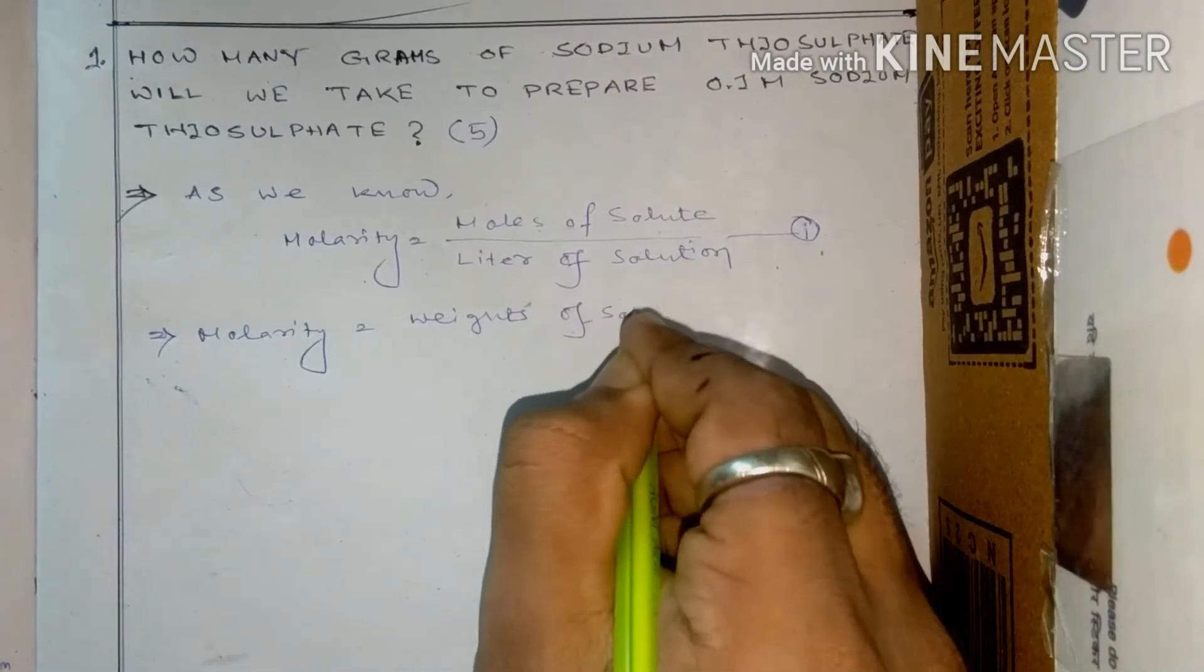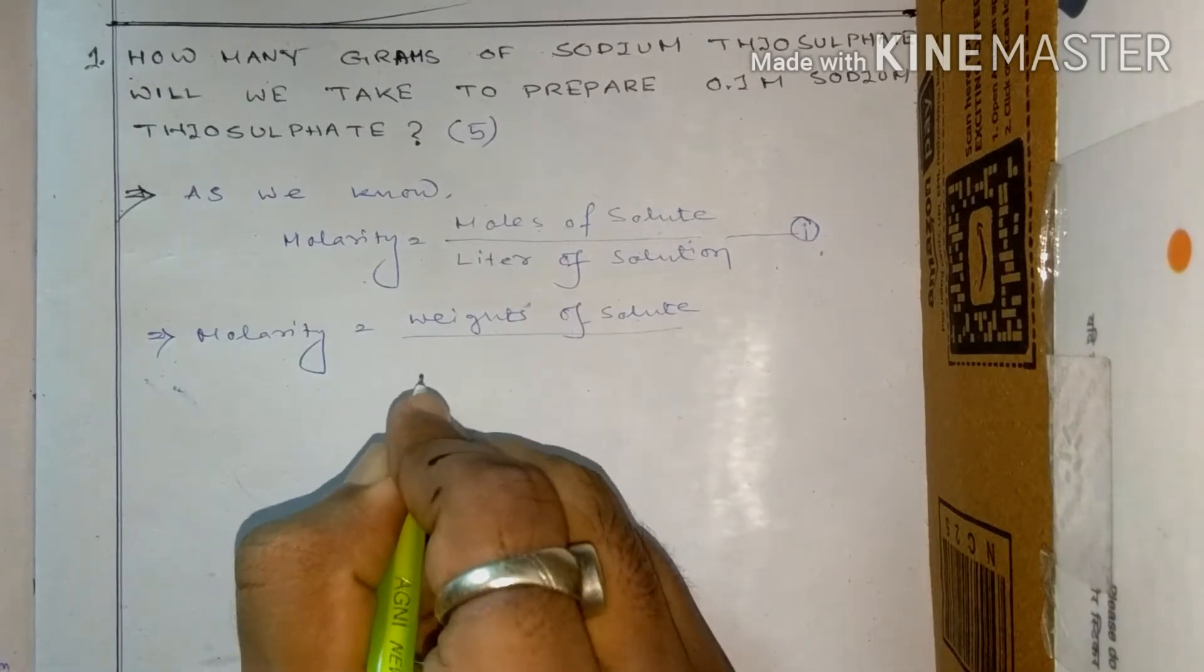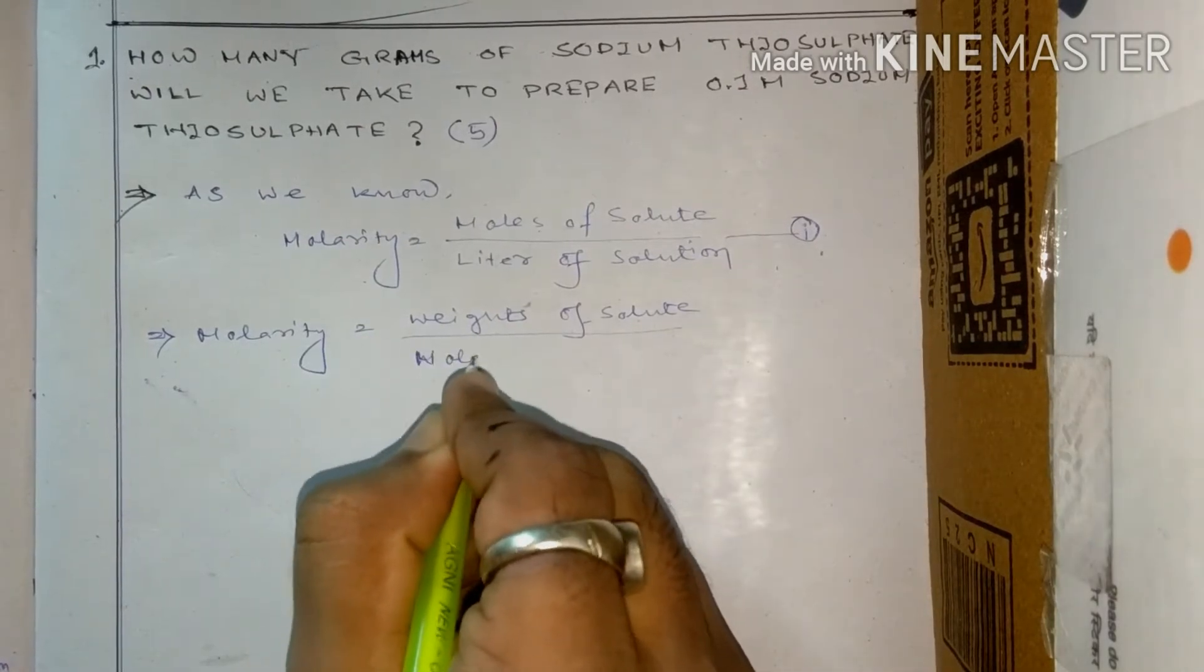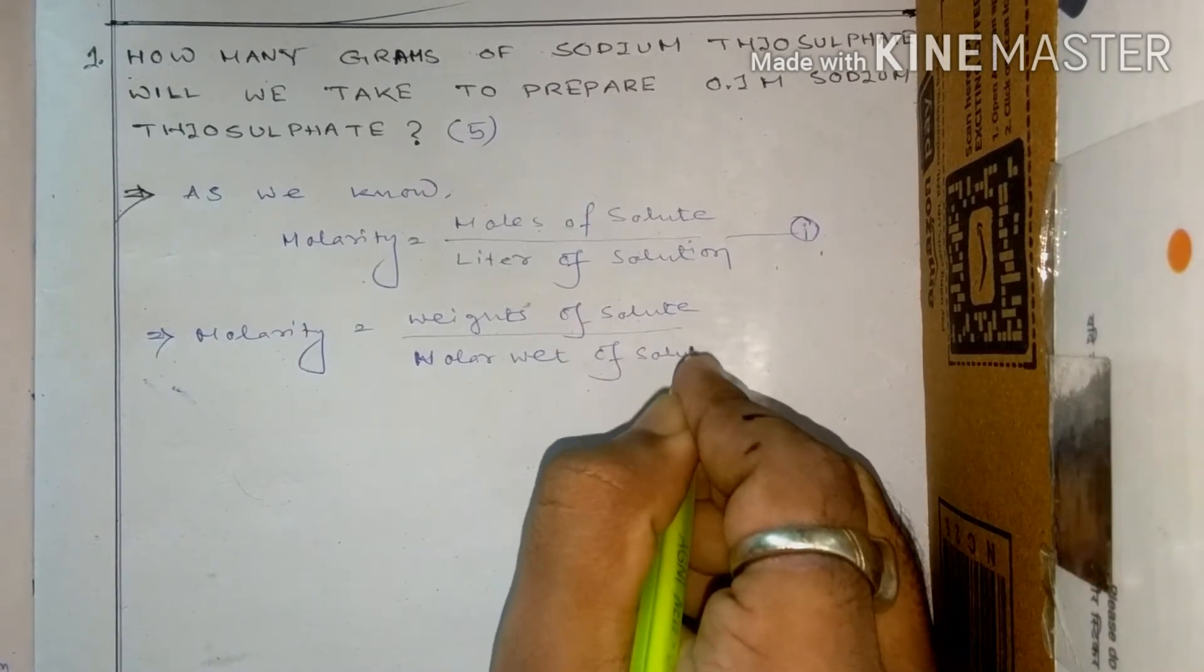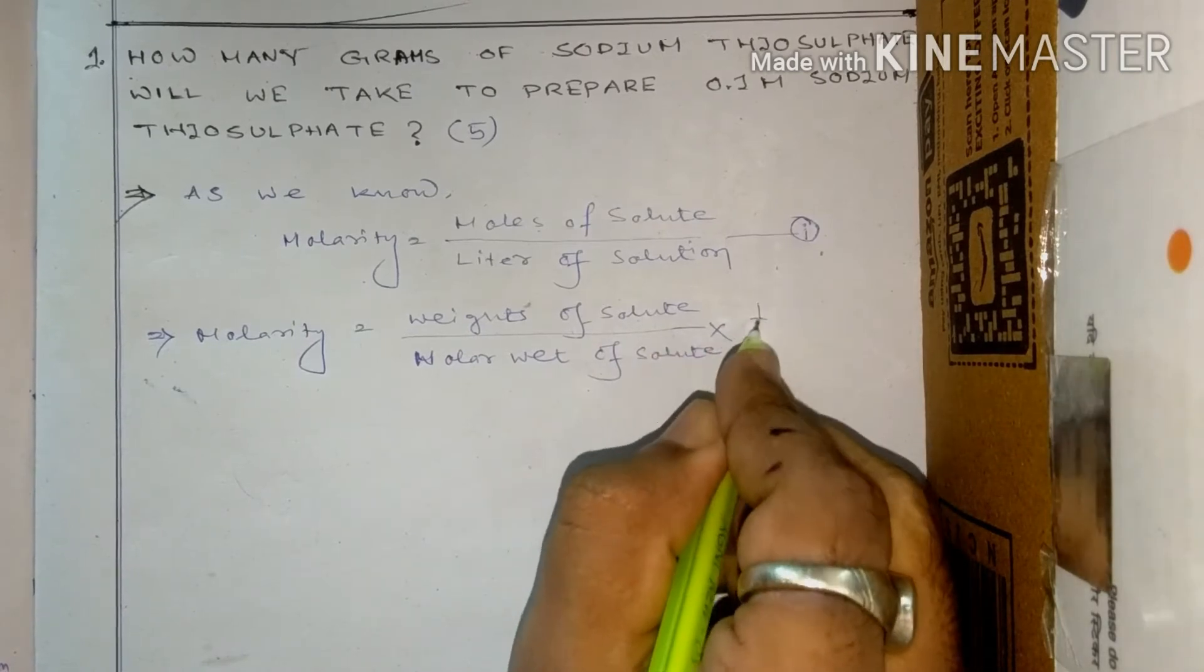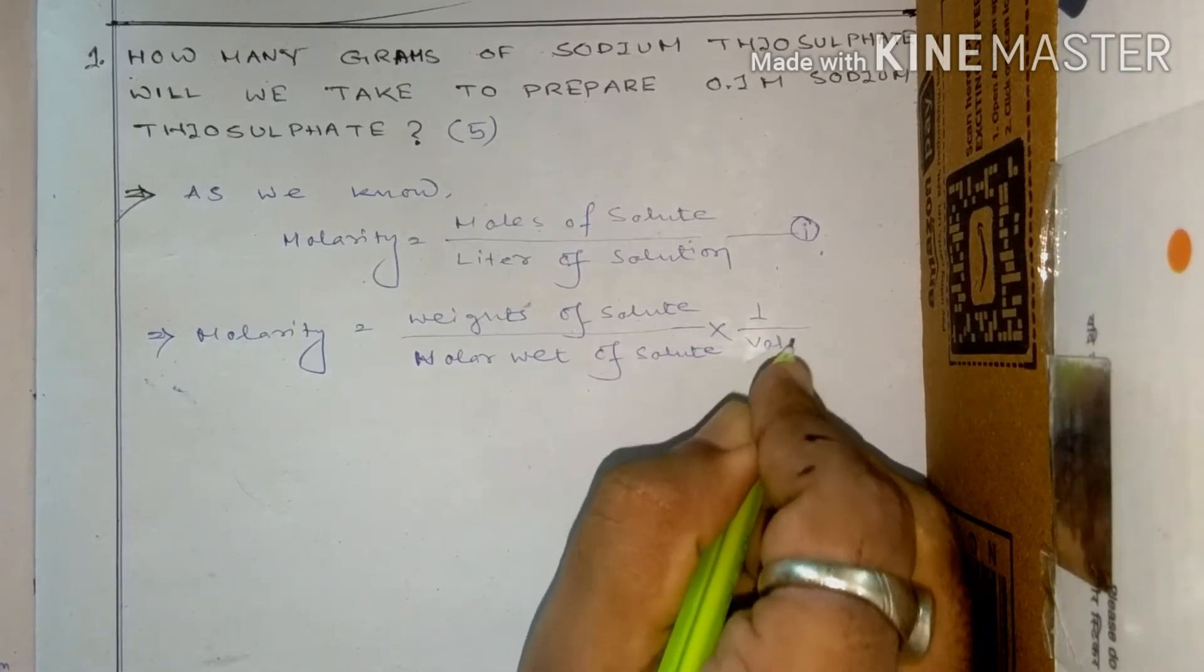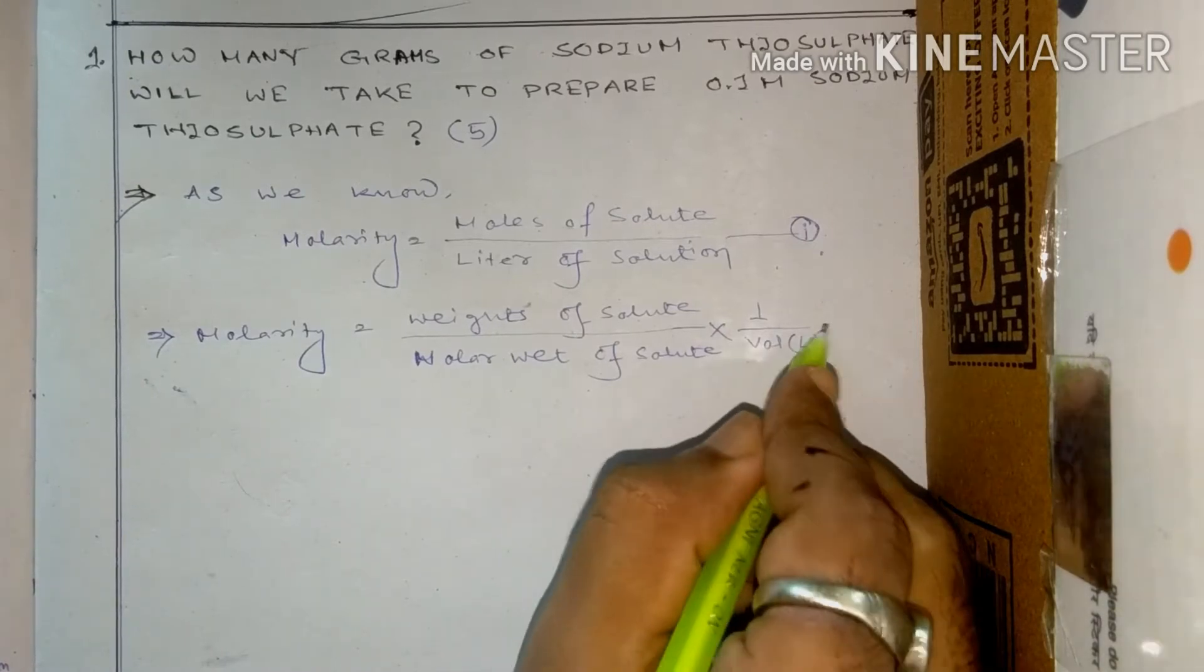And the second equation is that molarity equals weight of solute by molar weight of solute times one by volume. So this volume is in liters. So this is the second one.